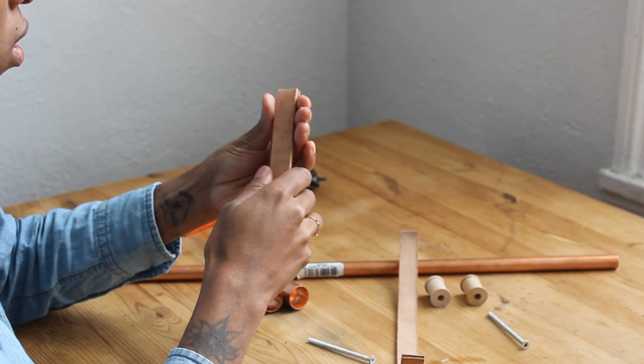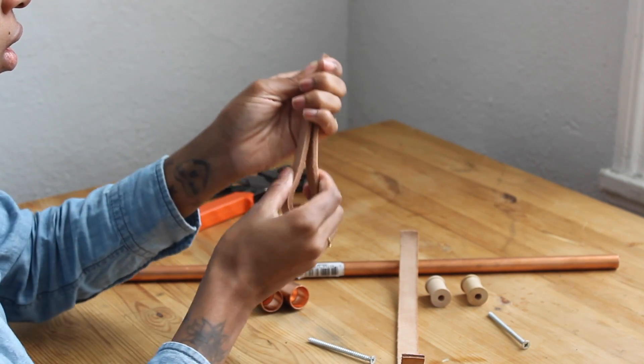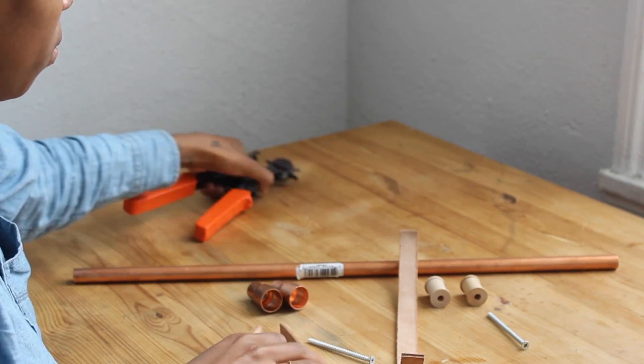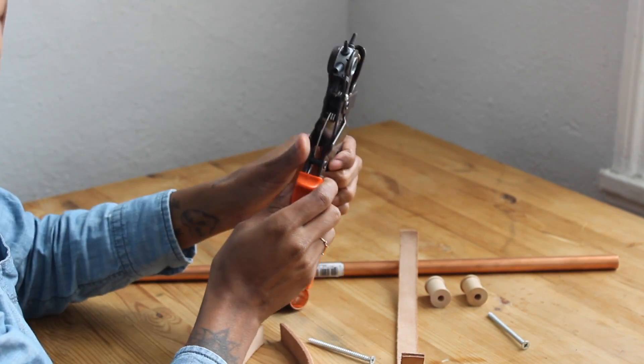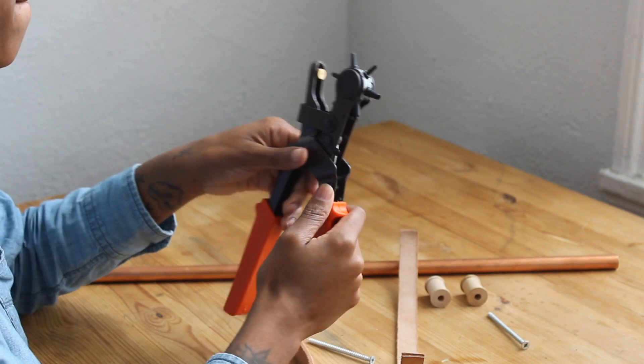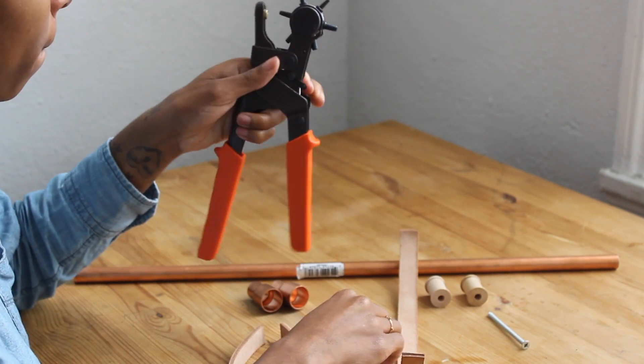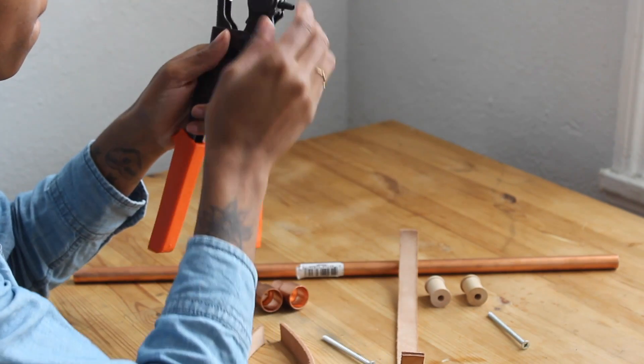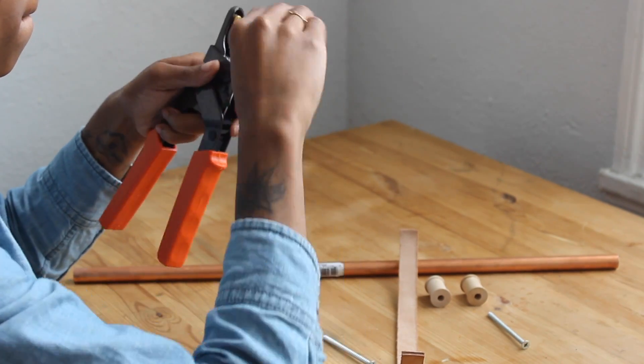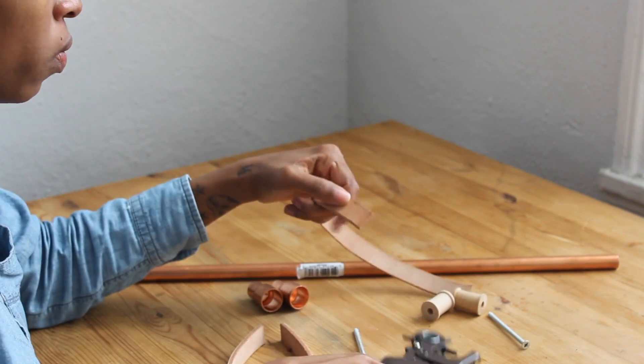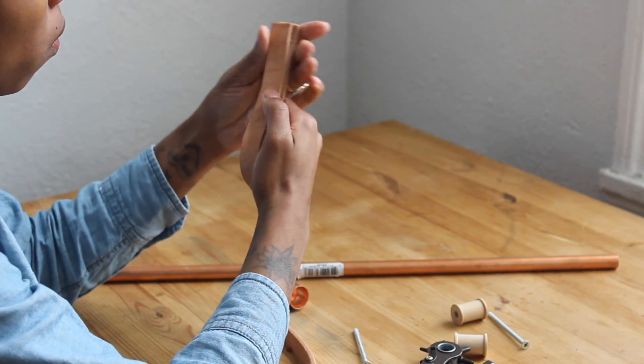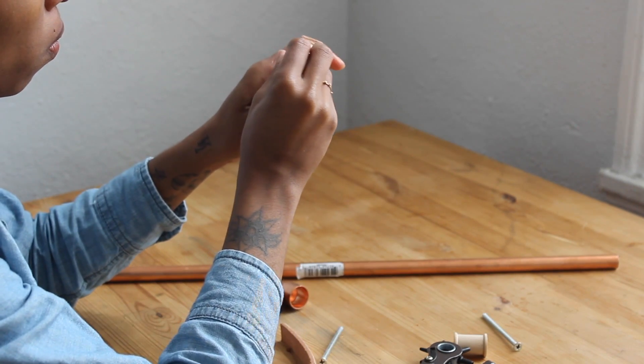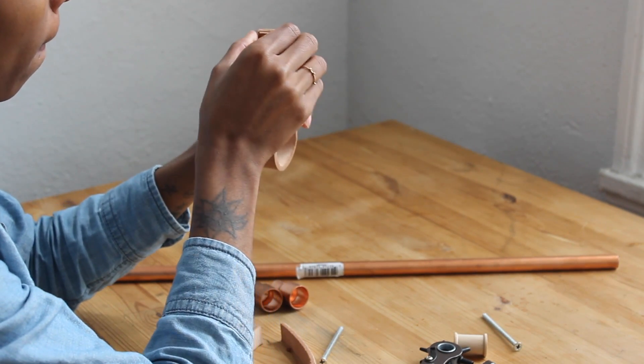So now I take one of the strips and fold it in half and just measure that out, make sure that's looking right. Next up I'm grabbing my leather hole punchers and I'm just trying to figure out the right hole width to use for the screw.